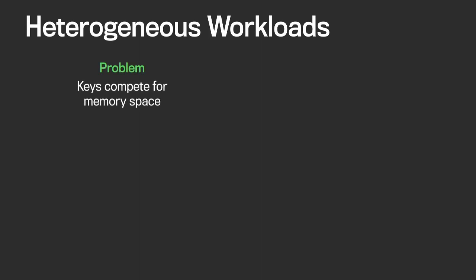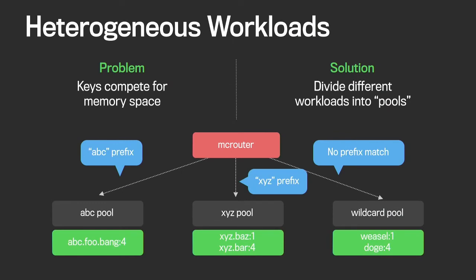Next we talk about heterogeneous workloads. The problem here is that keys compete for memory space. Imagine you have two datasets: one updated every day and the other updated every week. If they share the same cache servers, the more frequently updated dataset will tend to crowd out the less frequently updated one, and performance will suffer as a result. Our solution is to simply divide different workloads into pools. We do it by looking at the prefix of the key — keys starting with A, B, C are sent to the ABC pool, similarly for X, Y, Z keys, and all other keys are sent to the default wildcard pool.